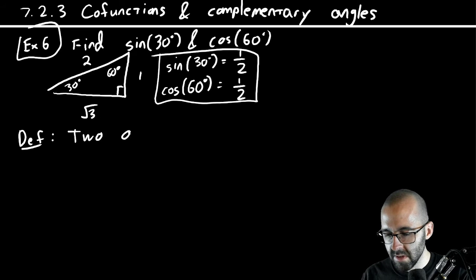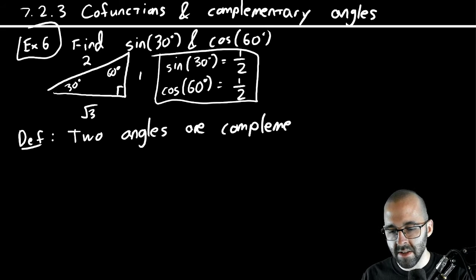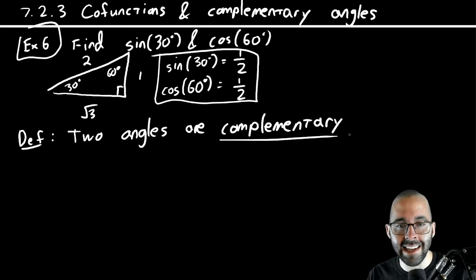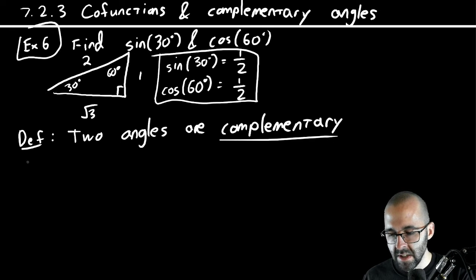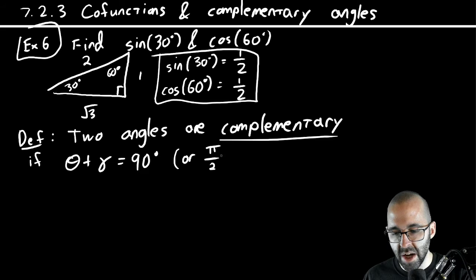Definition: Two angles are complementary - they say nice things to each other, just kidding, it's a different complementary, this one has an E. Complement is where I say you're doing great today or you're a good math student. Two angles are complementary if they add up to 90 degrees. So let's say if theta plus gamma equals 90 degrees. Remember 90 degrees is the same as pi over 2. That's what complementary means.